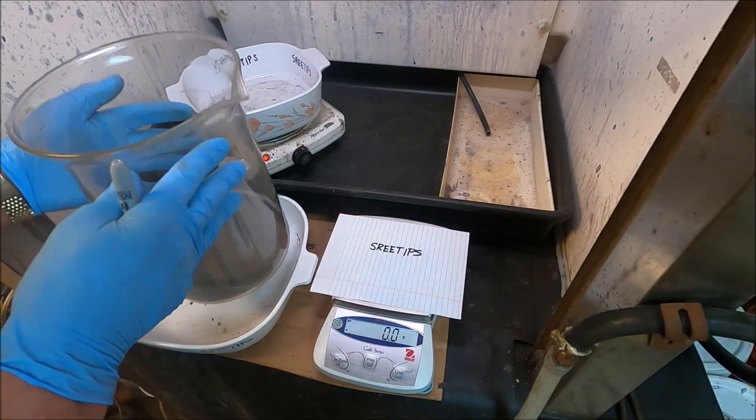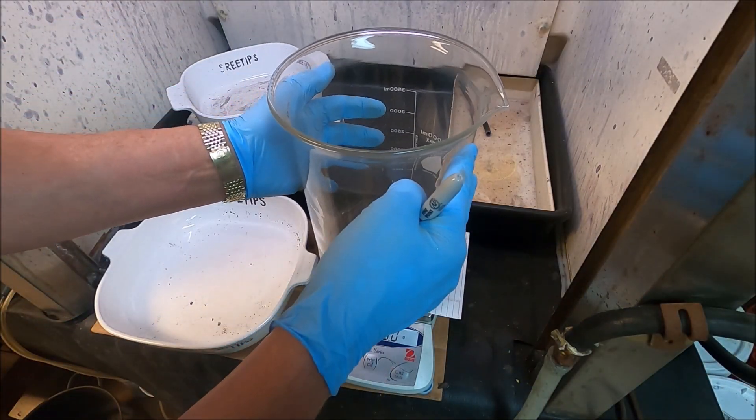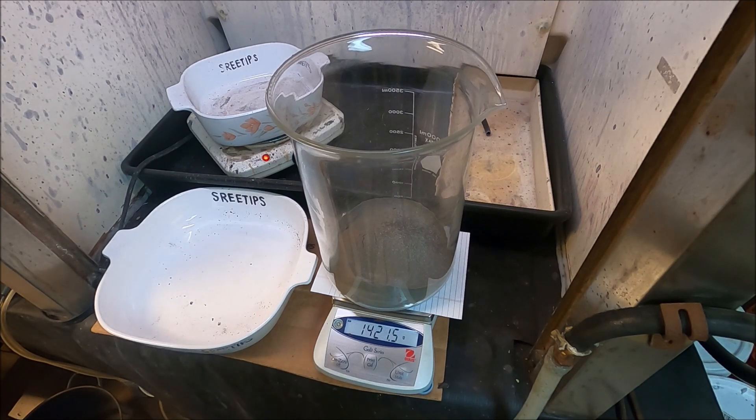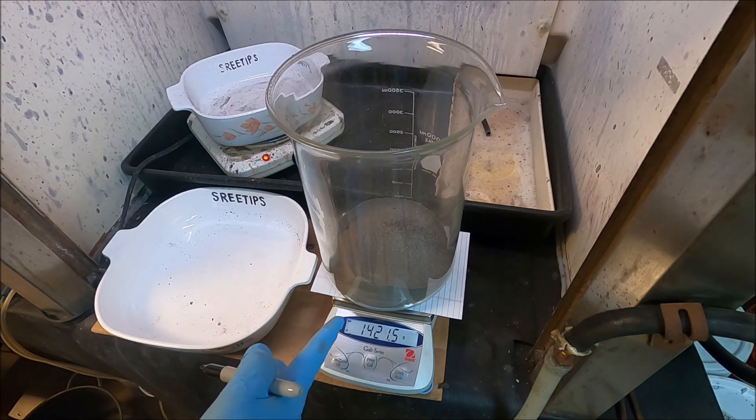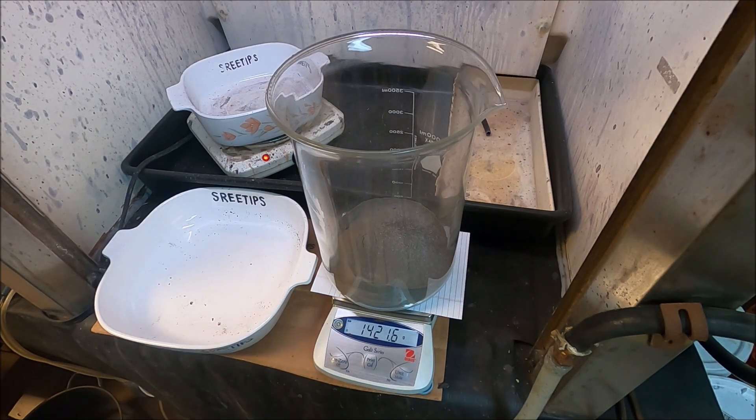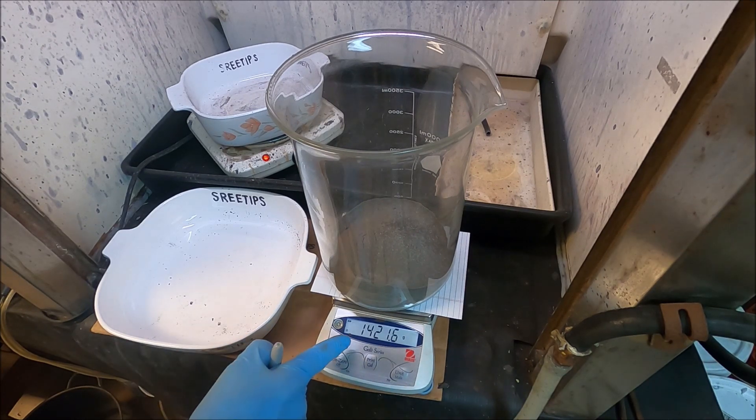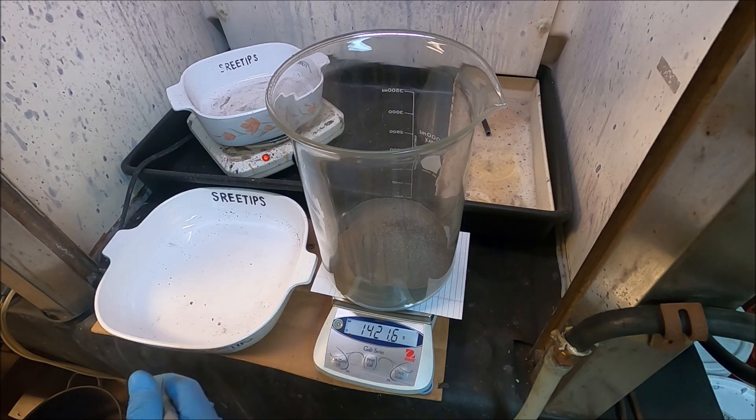So now what I'm going to do is just weigh the beaker with the material in it and record that weight. And then when we get everything out of there we'll weigh the beaker by itself and we'll be able to calculate the yield. 1,421.6 grams.